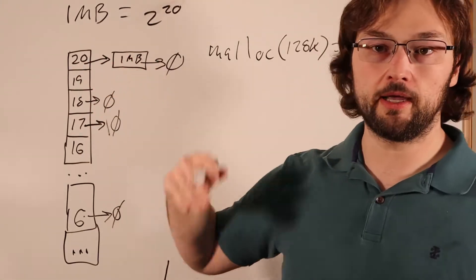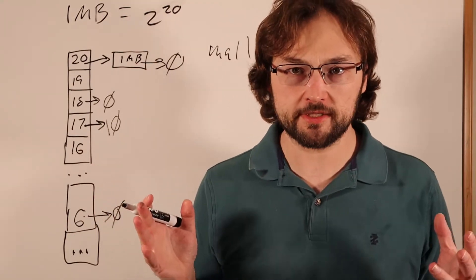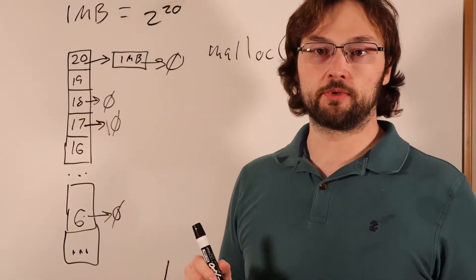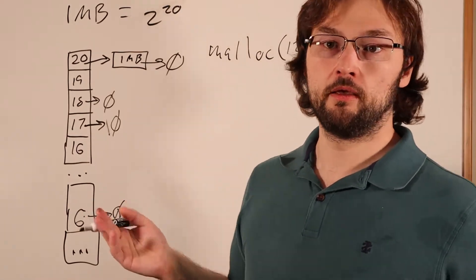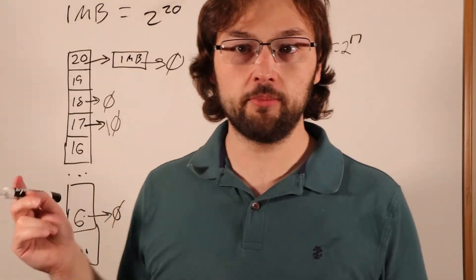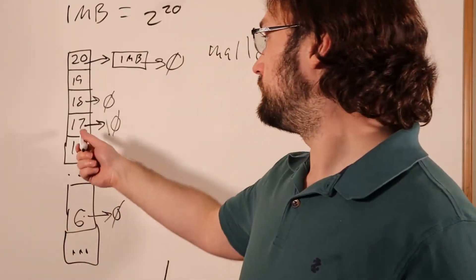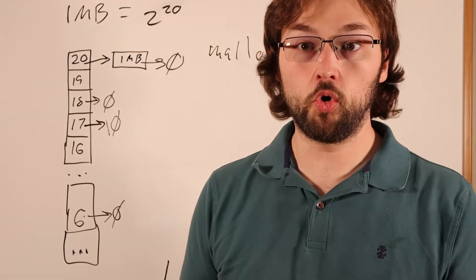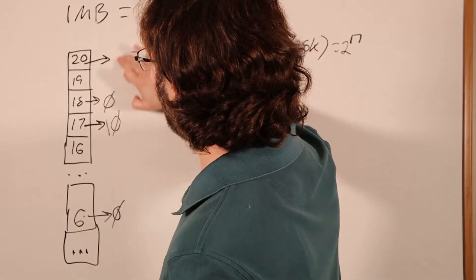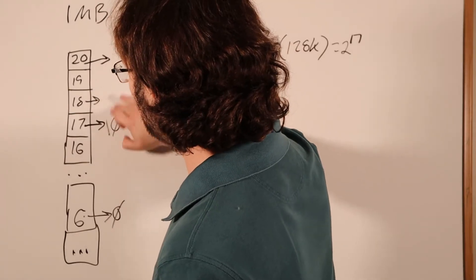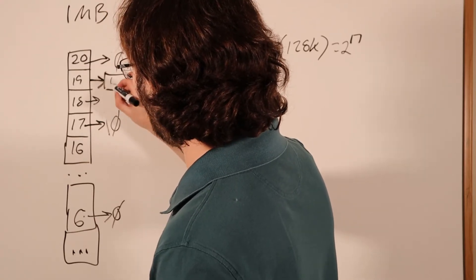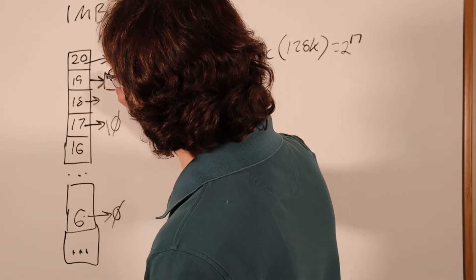We recursively search upward until we find a slot or reach the top of the array. The heap size is probably a compile-time constant, so we loop up to slot 20. If slot 20 is empty, we either throw an error or, for multiple arenas, allocate a whole new heap. In this case slot 20 has something, so we take that one-megabyte block out of slot 20 and split it into two pieces. Slot 20 now has nothing; slot 19 gets a 512k block.